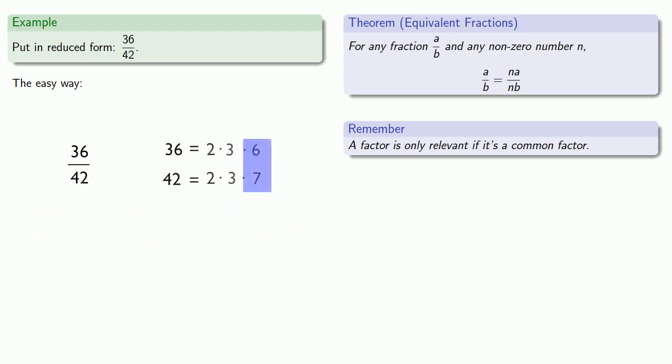And, since 7 and 6 have no common factors, we can stop our factorization here. 6 may have additional factors, but none of them are going to be useful. So, equals means replaceable, so we'll replace 36 and 42 with their factored forms. We'll remove our common factors of 2 and 3, and what's left over is 6 7ths.